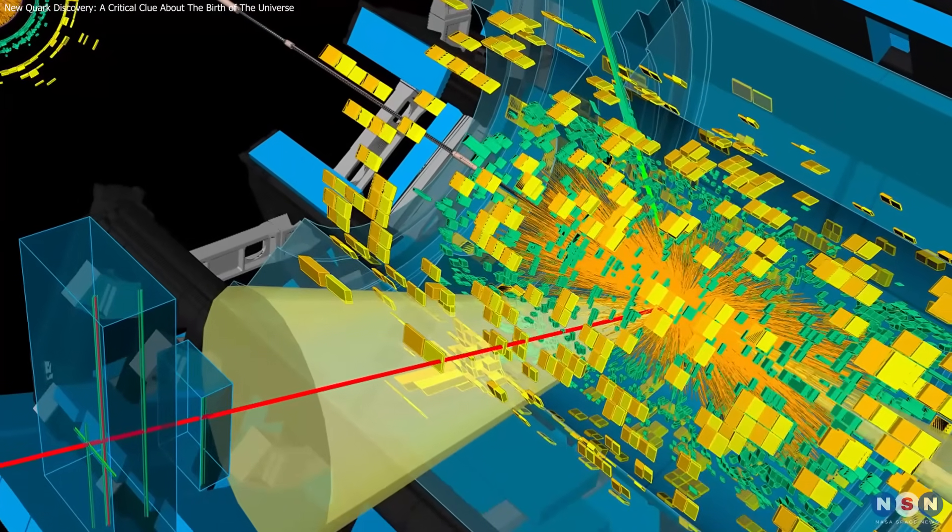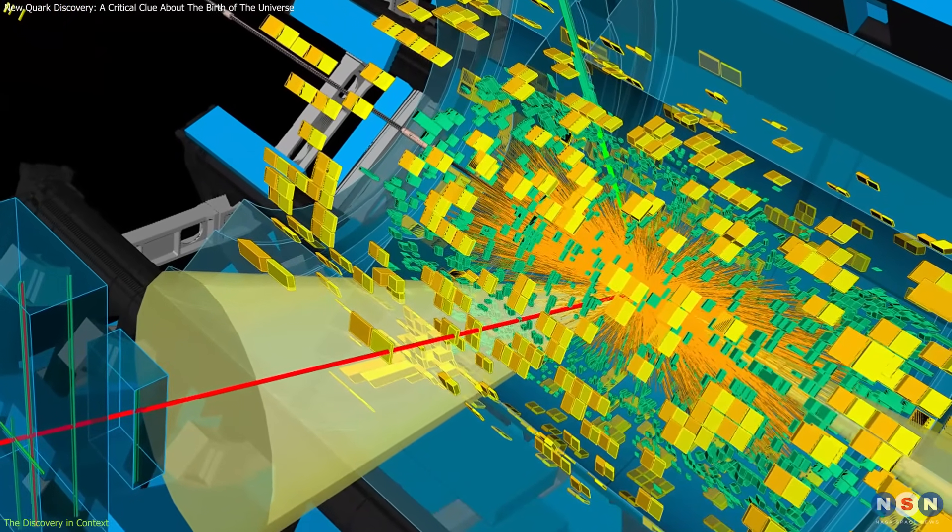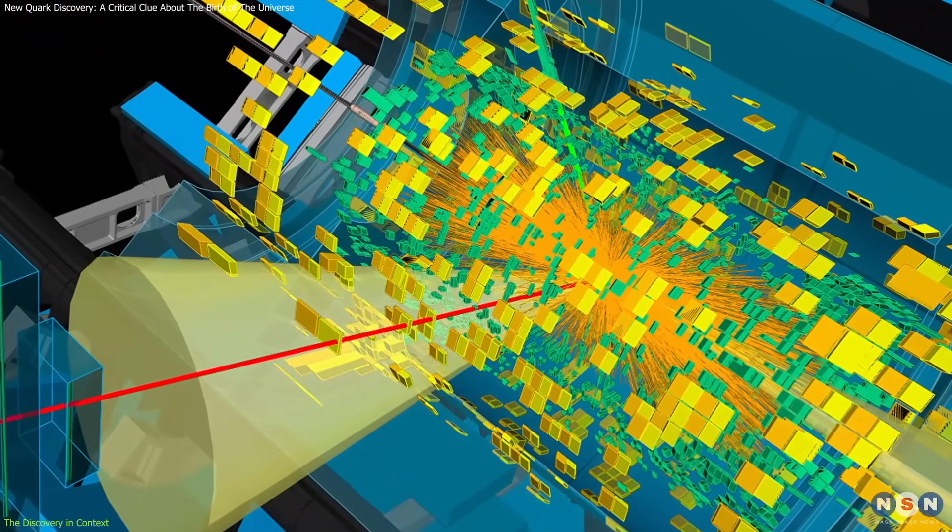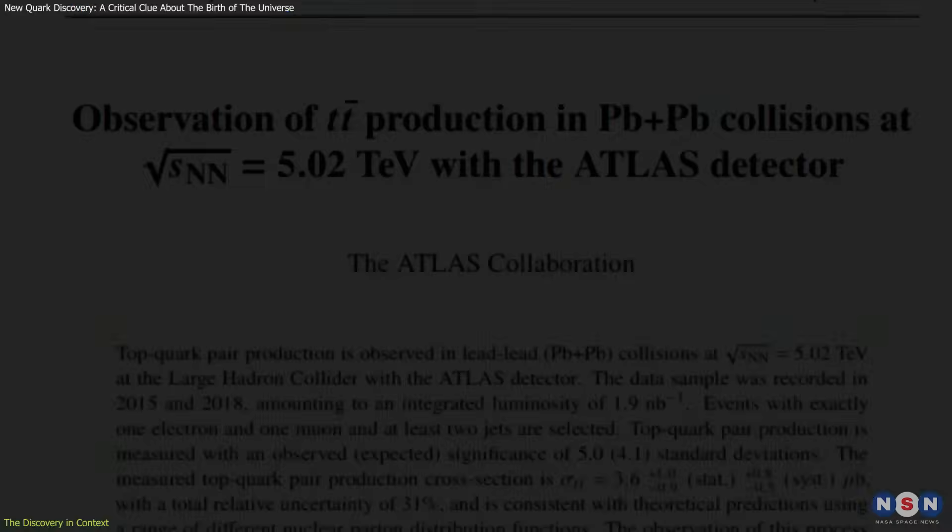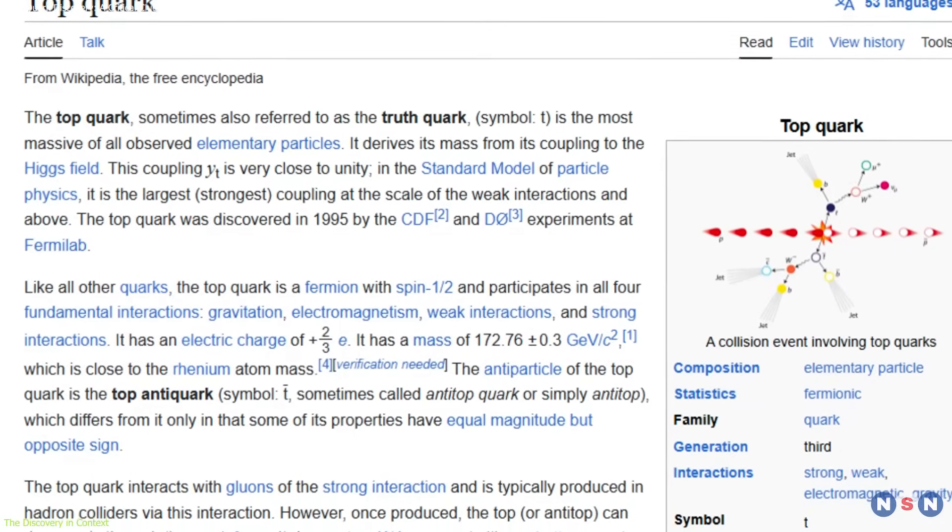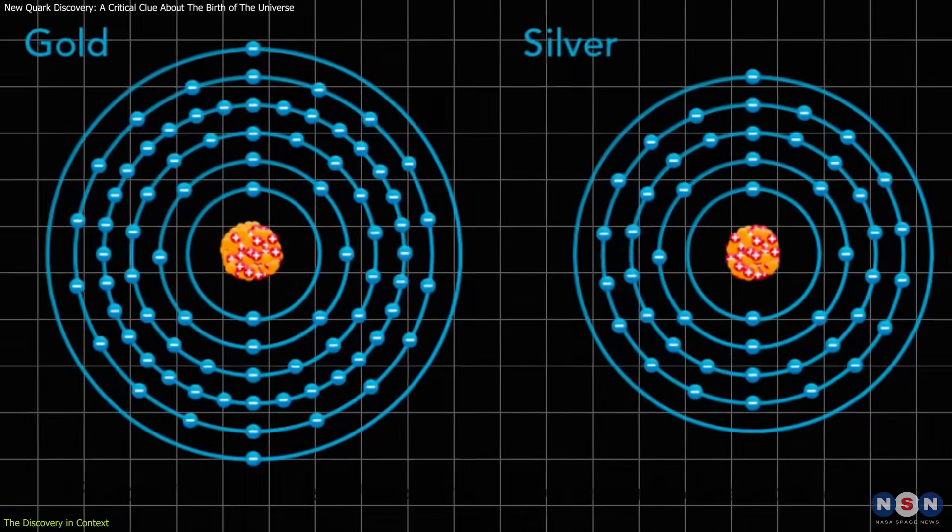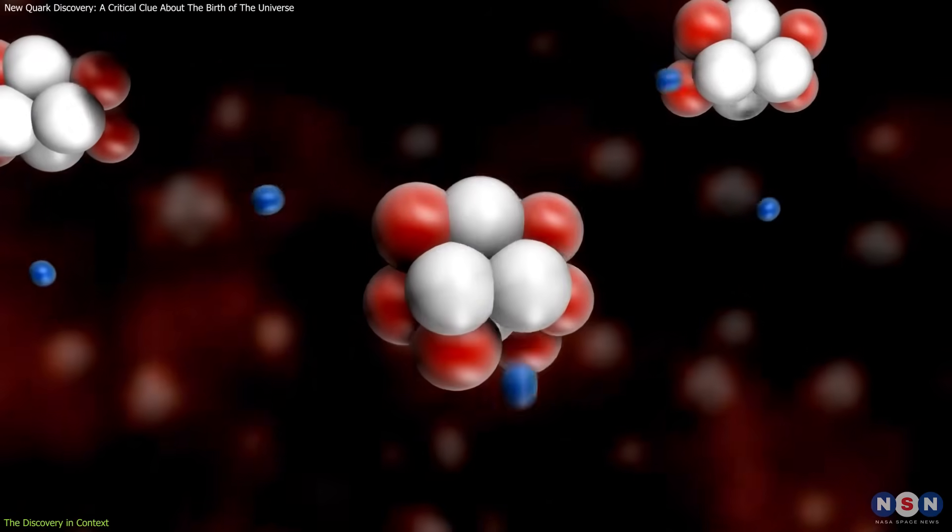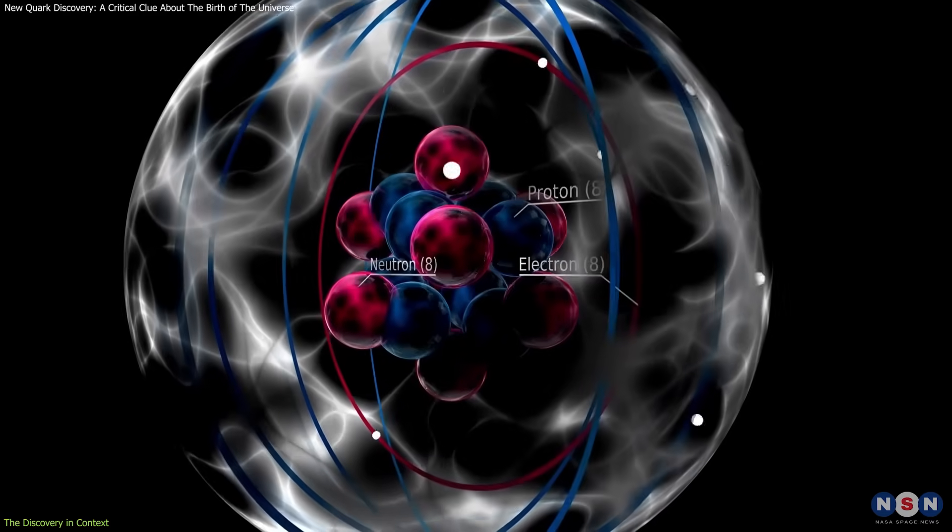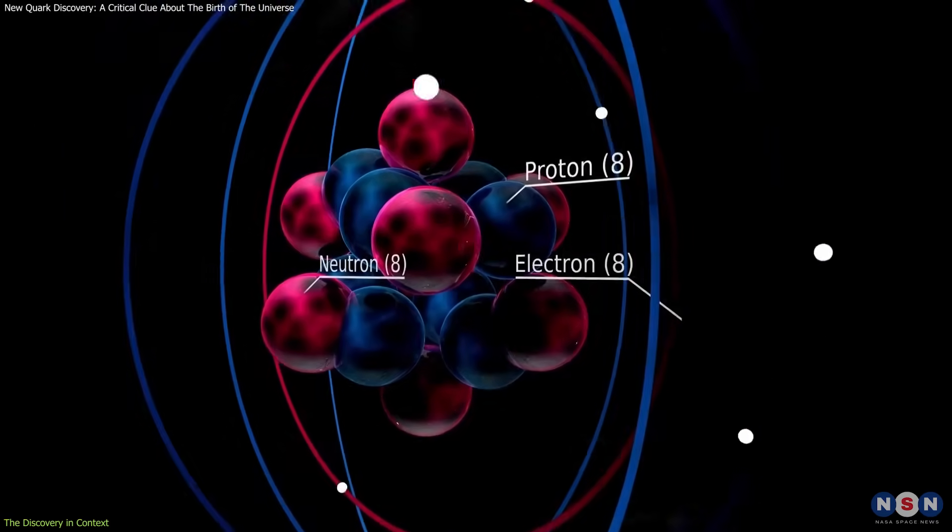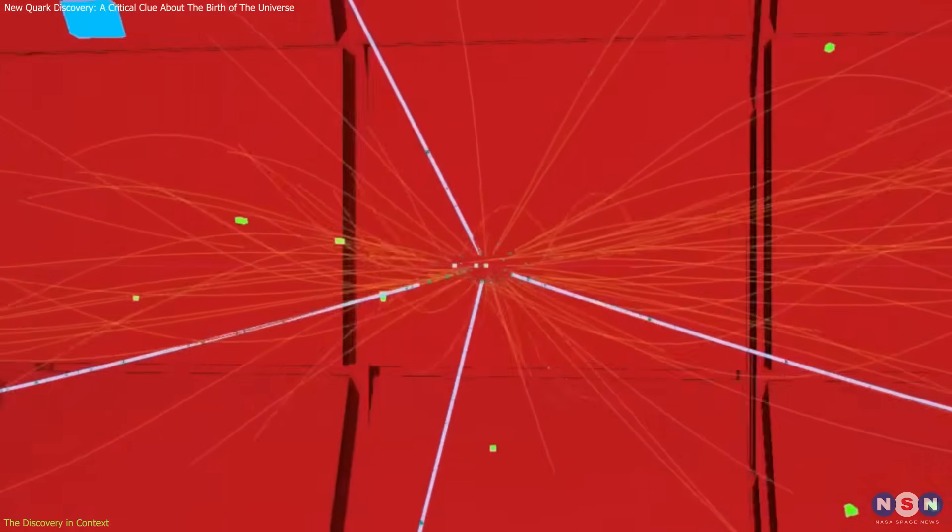For the first time ever, scientists observed top quark pair production in lead-lead collisions, the most energy-dense collision studied so far. Top quarks are the heaviest elementary particles we know, roughly as massive as a gold atom. They're also incredibly short-lived, decaying in about 10 to the minus 25th seconds, faster than light can cross a proton. So, how did scientists spot them?